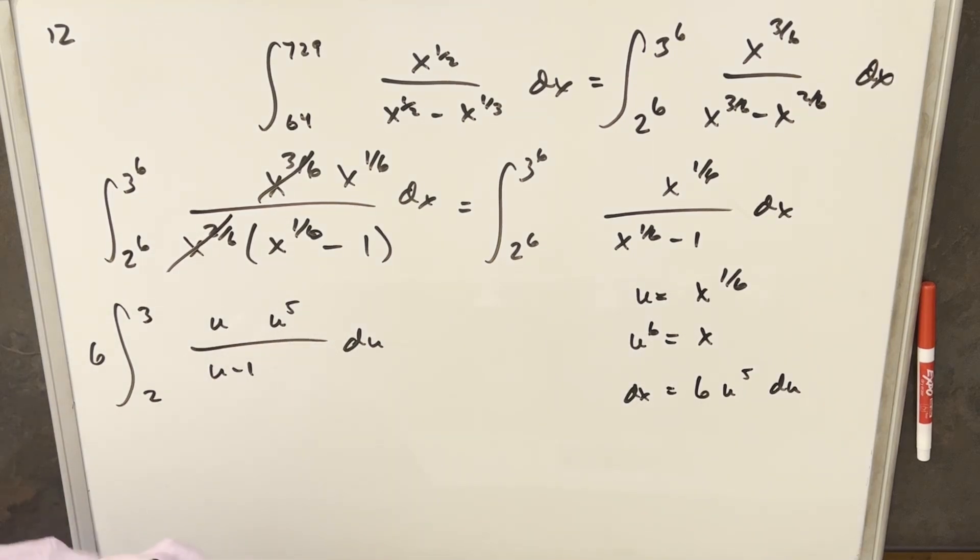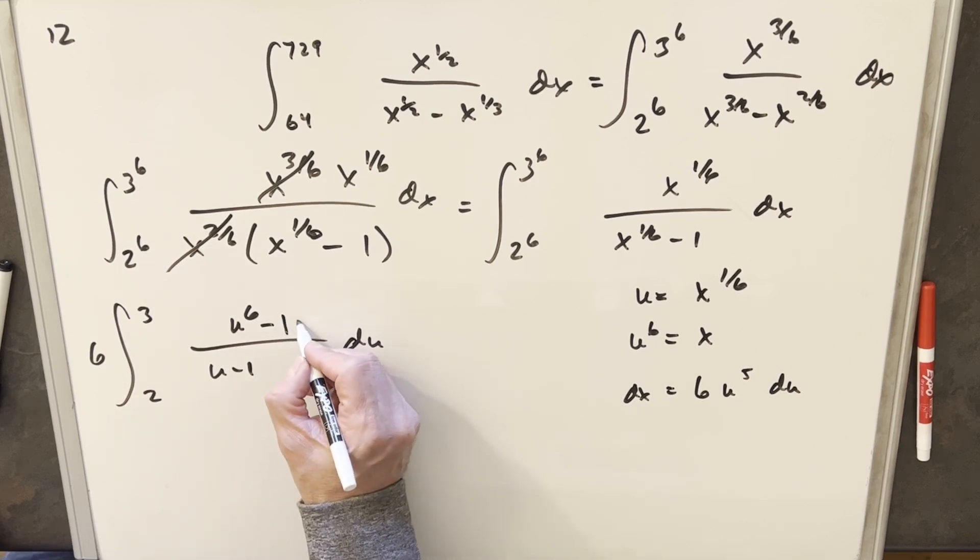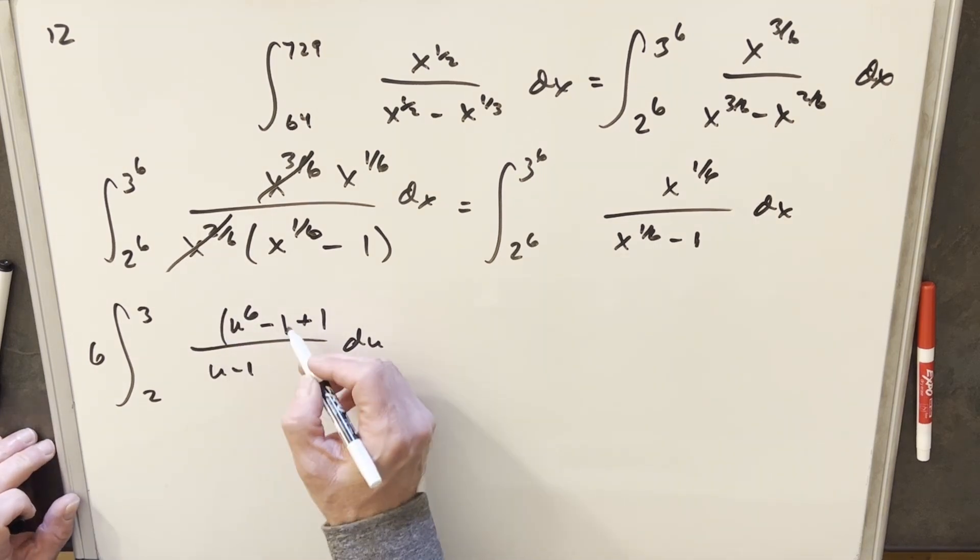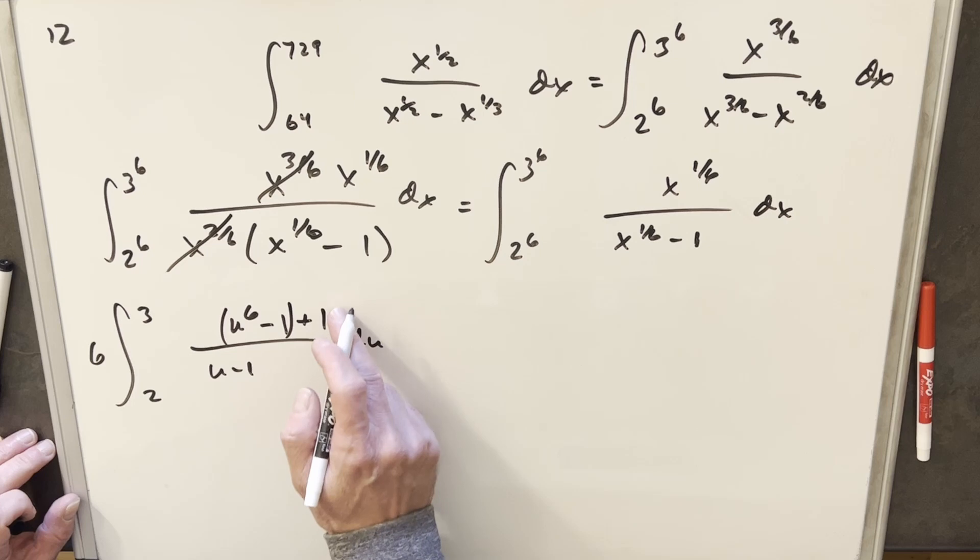Well u times u to the 5th is just u to the 6th. But for a rational function before we integrate we usually want a smaller power in the numerator. So I'm going to need to factor this. To set this up I'm going to subtract 1 to get this to work, but then add 1 so I'm not changing it. Then we can split this into two integrals.